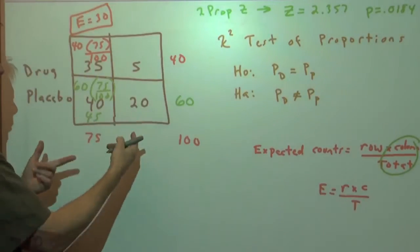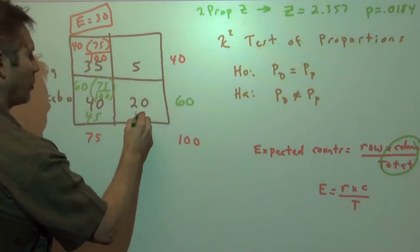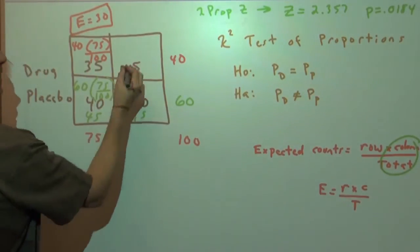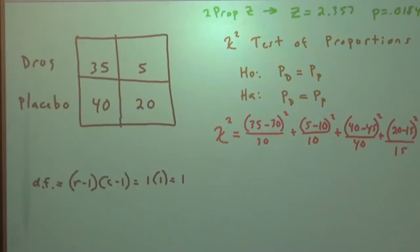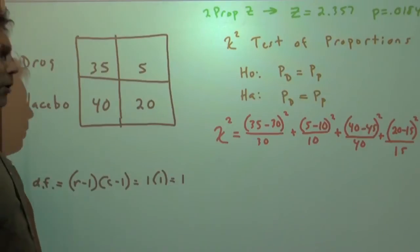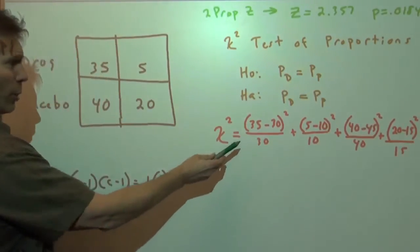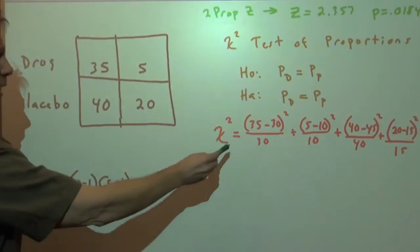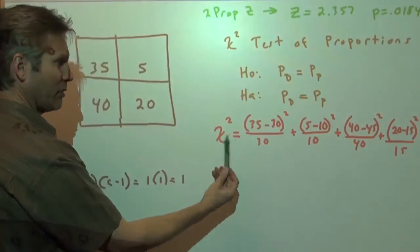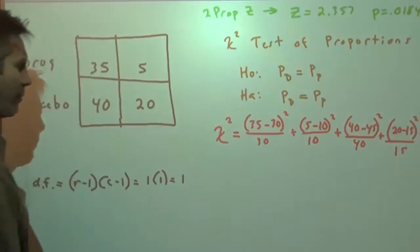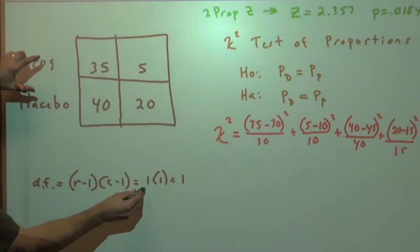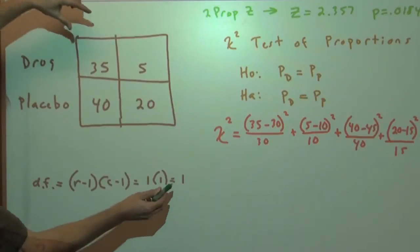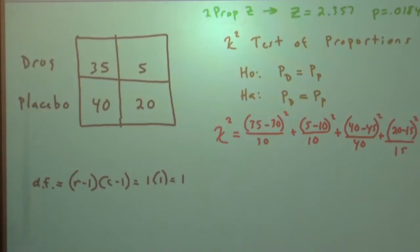And we do the same thing here. We do row total times column total. So we get our expected counts of 15 here and 10 here. So we have our expected counts, our observed counts. Then we go to what we've always done. For the chi-squared, we take the observed count minus the expected count squared over the expected count. We do that for each cell. Now our degrees of freedom is going to be rows minus one times columns minus one. So two rows minus one is one. Two columns minus one is one. So degrees of freedom, we have one degree of freedom.